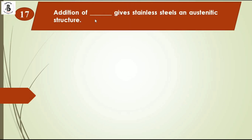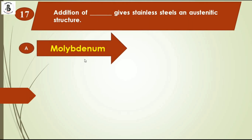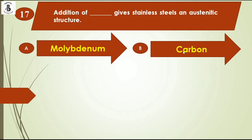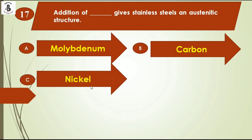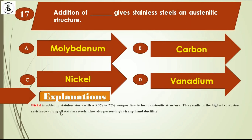Addition of which element gives stainless steels an austenitic structure? Option A Molybdenum, option B Carbon, option C Nickel, option D Vanadium. Nickel is added to stainless steels in compositions of 3.5% to maximum 22% to form an austenitic structure, which results in the highest corrosion resistance among all stainless steels. They also possess high strength and ductility. So the right answer is option C, Nickel.